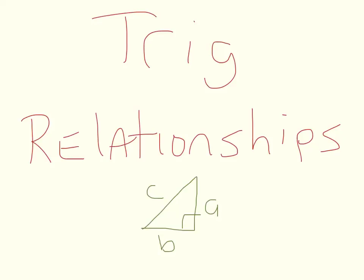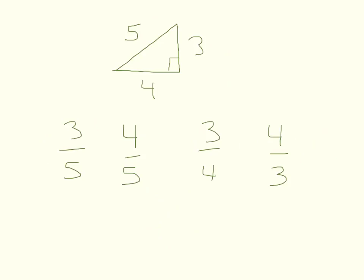We are talking about the trigonometric relationships — the relationships between the sides in a right triangle. We talked about four of the relationships. There are actually six, since we have three sides. But at the beginning, we just care about four of them: the short side over the long side, the medium side over the long side, short over medium, and medium over short.